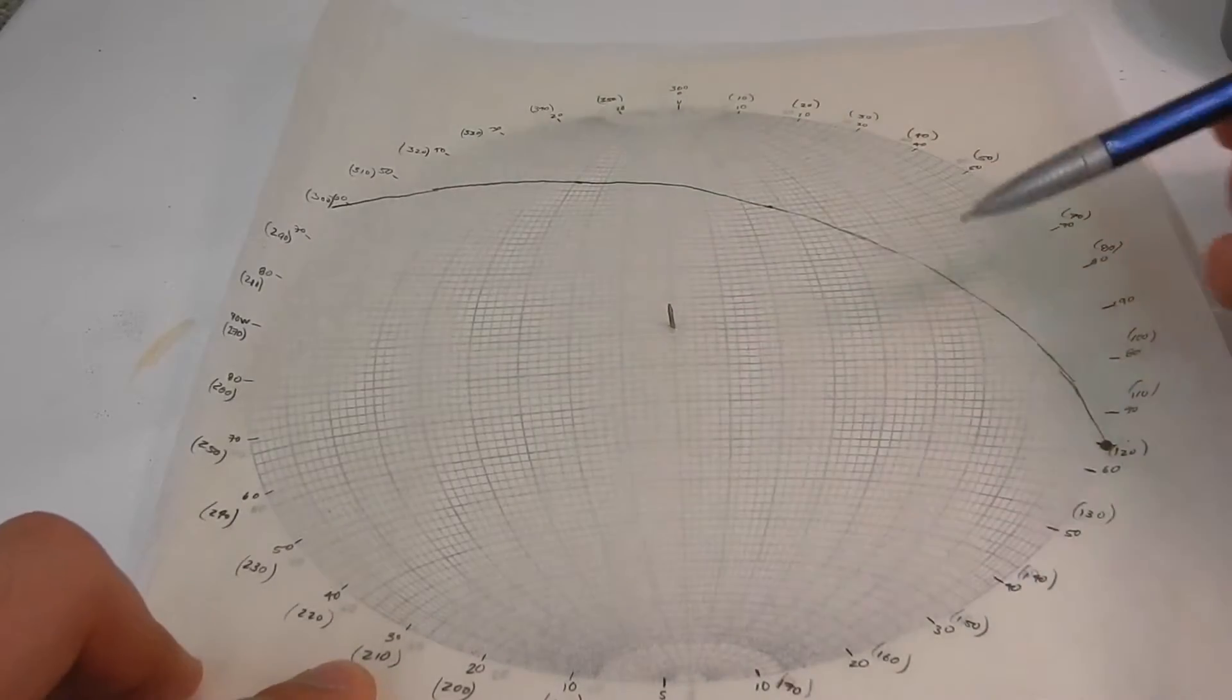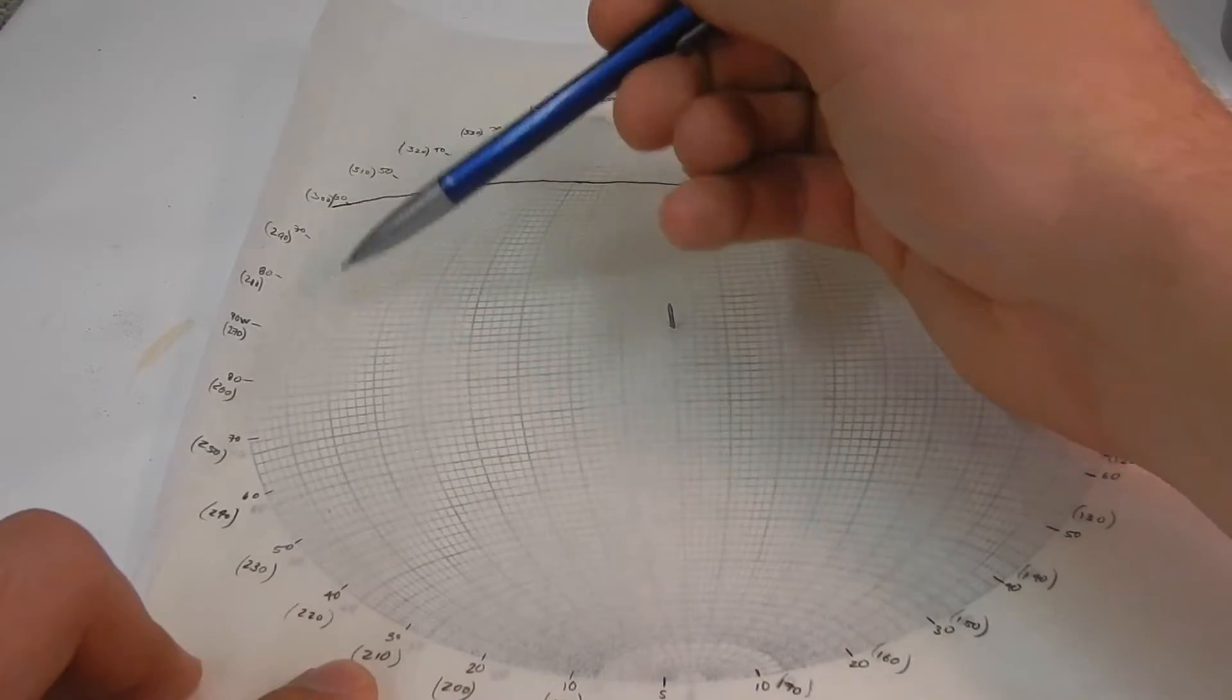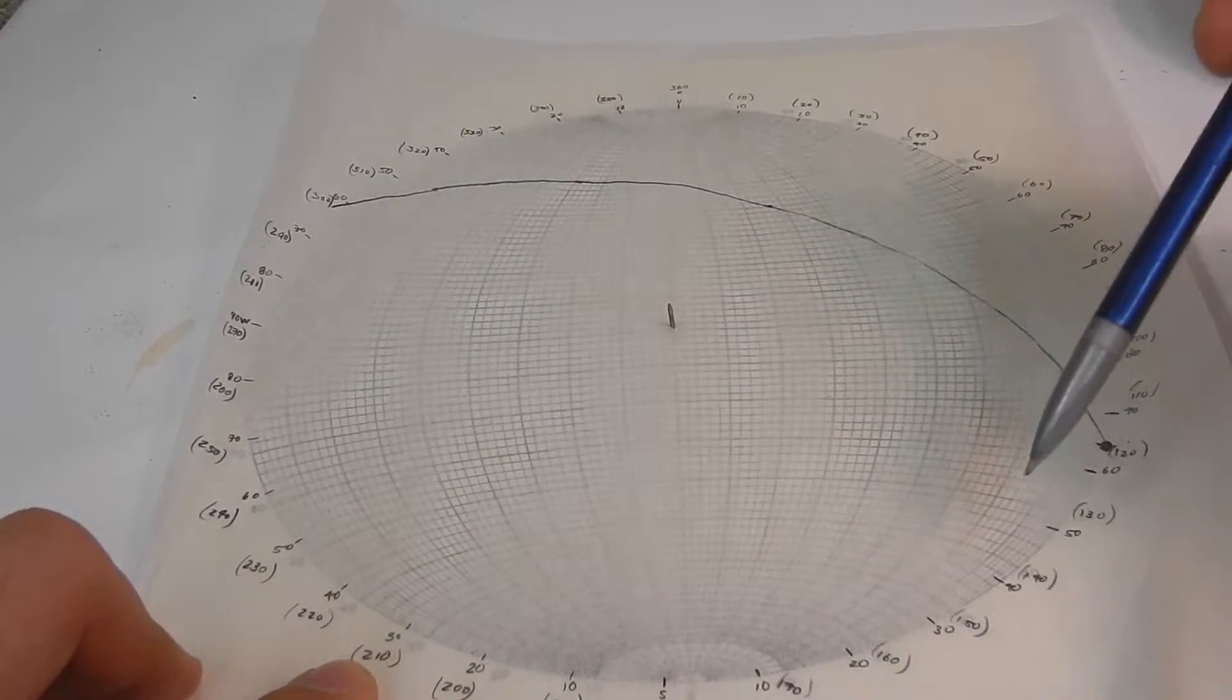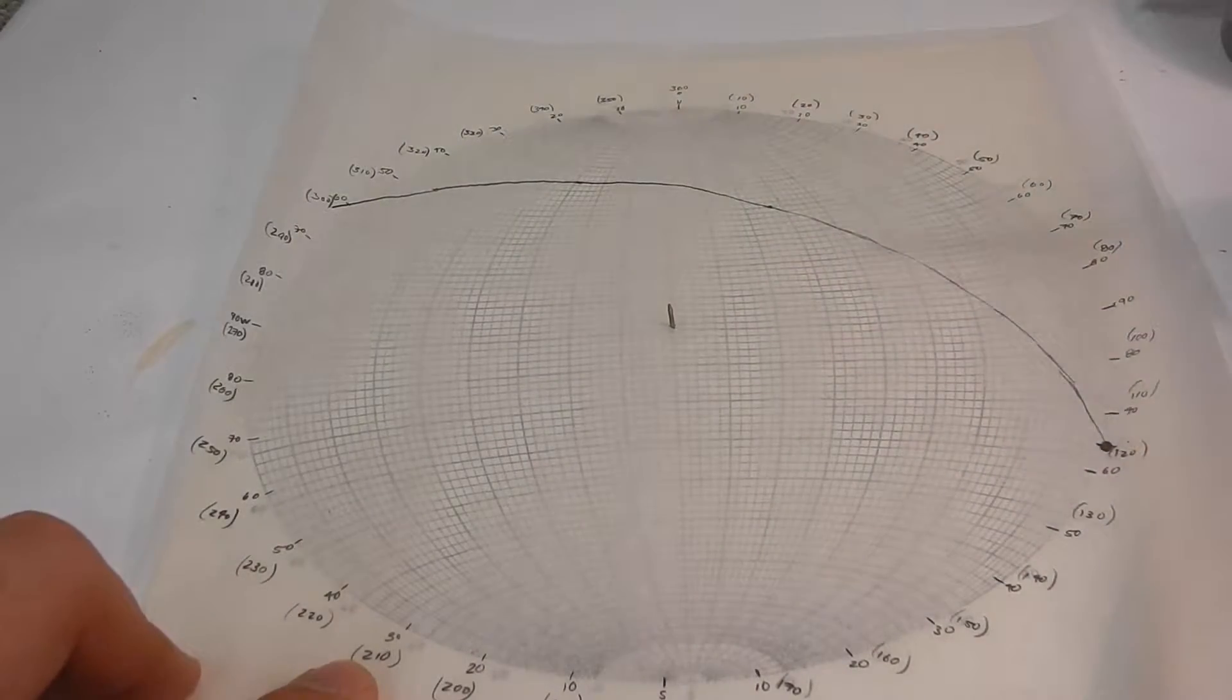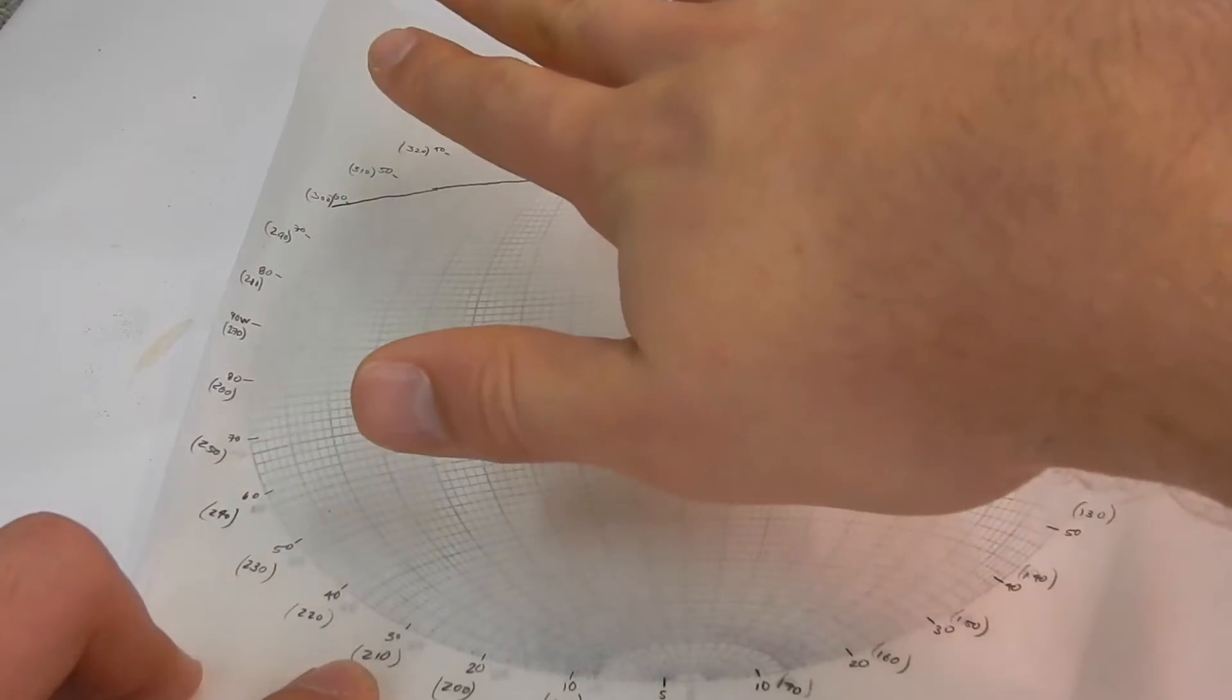It's very easy to rotate your stereonet wrong, and this could be completely flipped to where it's actually like this. That's what it would look like if our plane wasn't dipping like that, but if it was dipping like that.